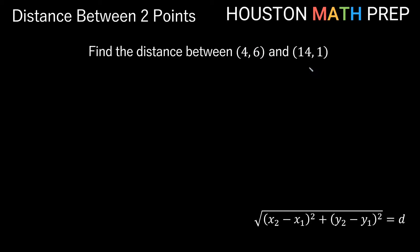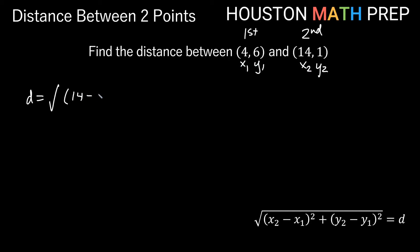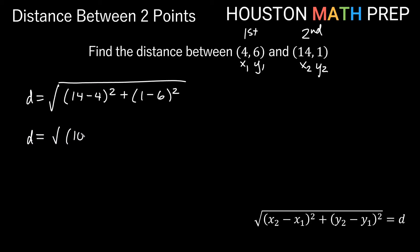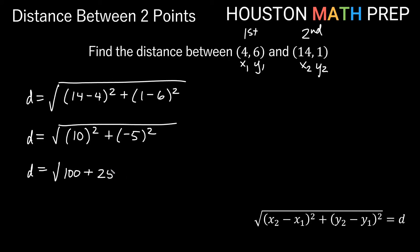Now let's work one where we get a square root that can be simplified. Find the distance between 4 comma 6 and 14 comma 1. So x1 equals 4, y1 equals 6, x2 equals 14, y2 equals 1. Distance equals the square root of (14 minus 4) squared plus (1 minus 6) squared, which gives the square root of 10 squared plus negative 5 squared, equal to the square root of 100 plus 25, which is the square root of 125.